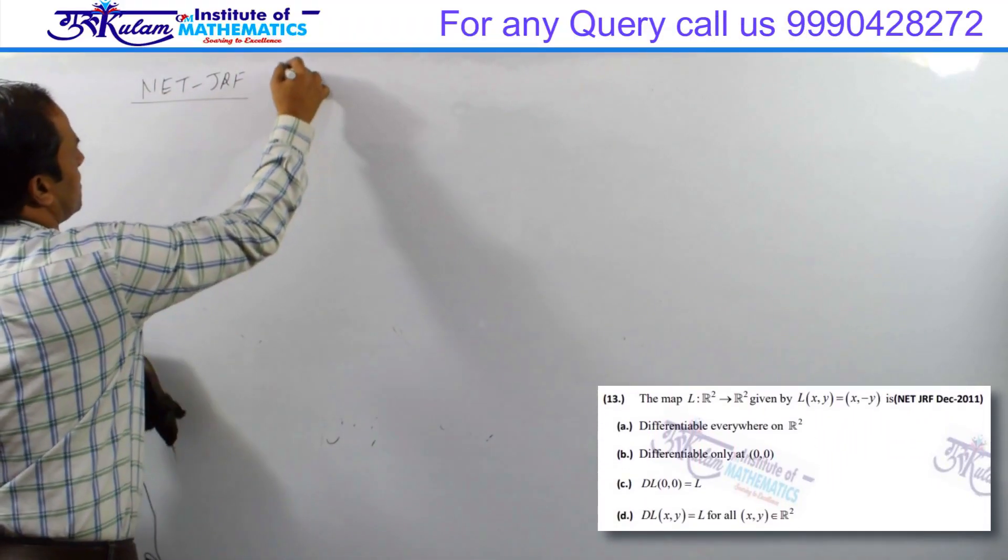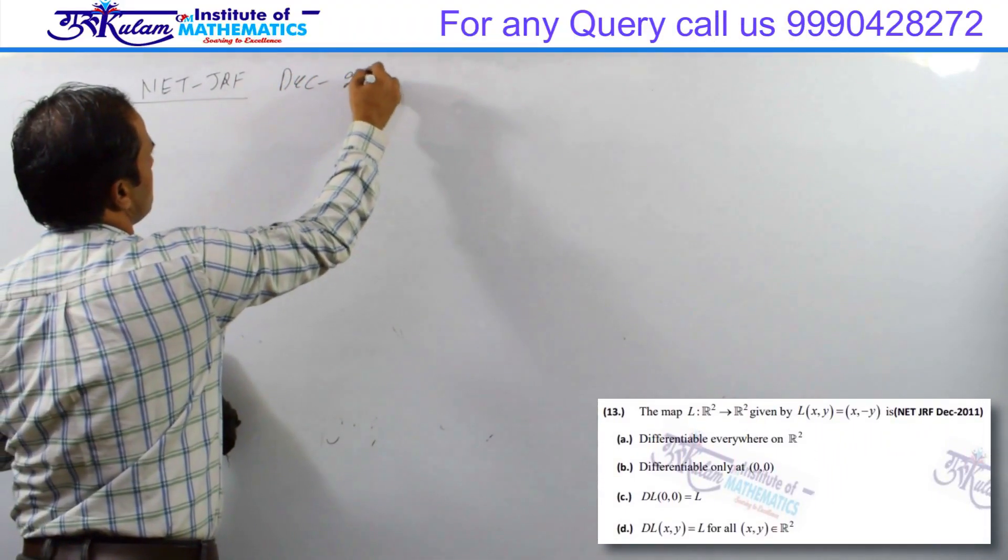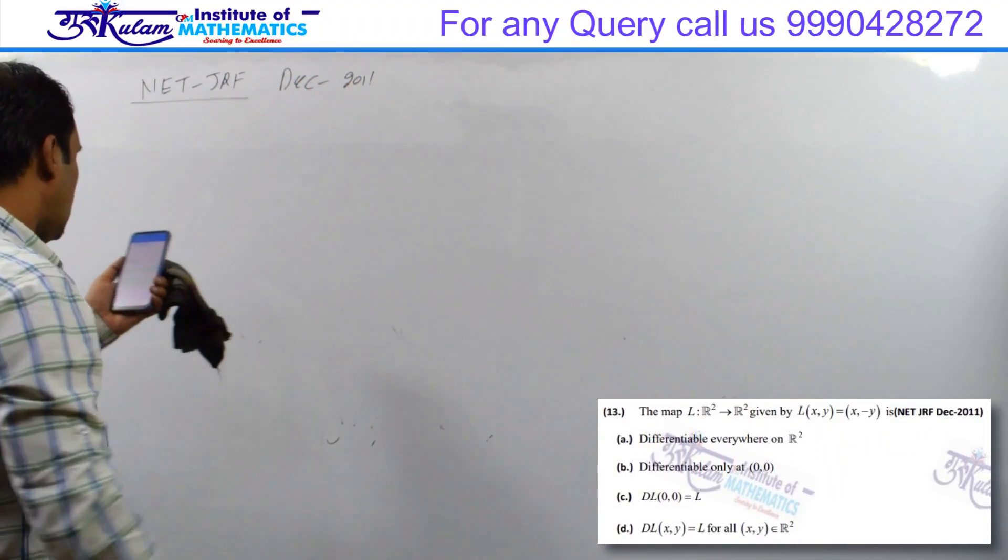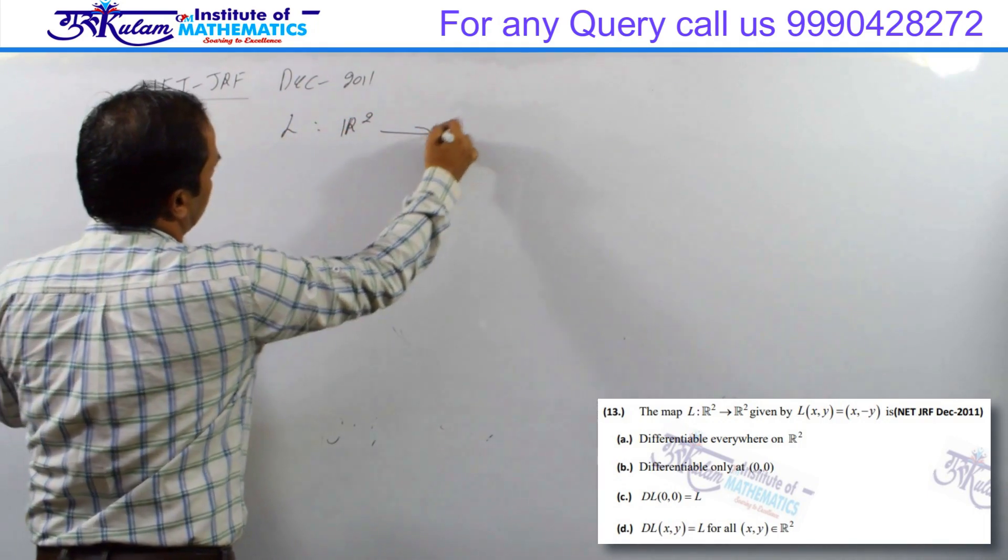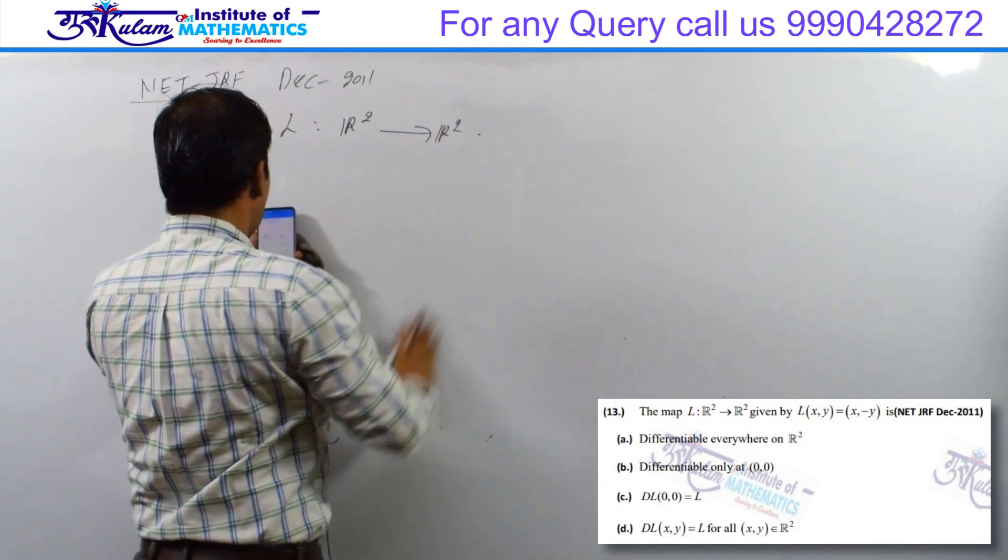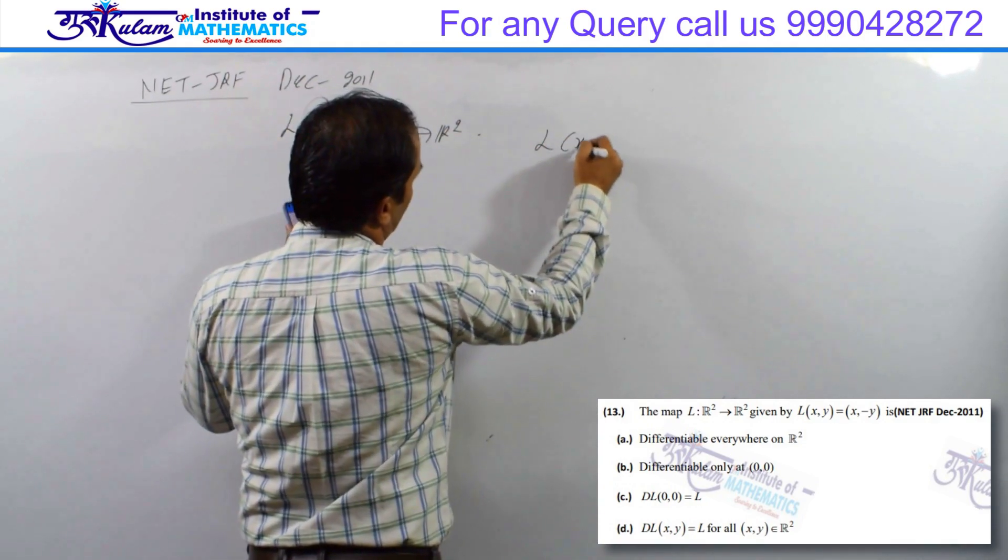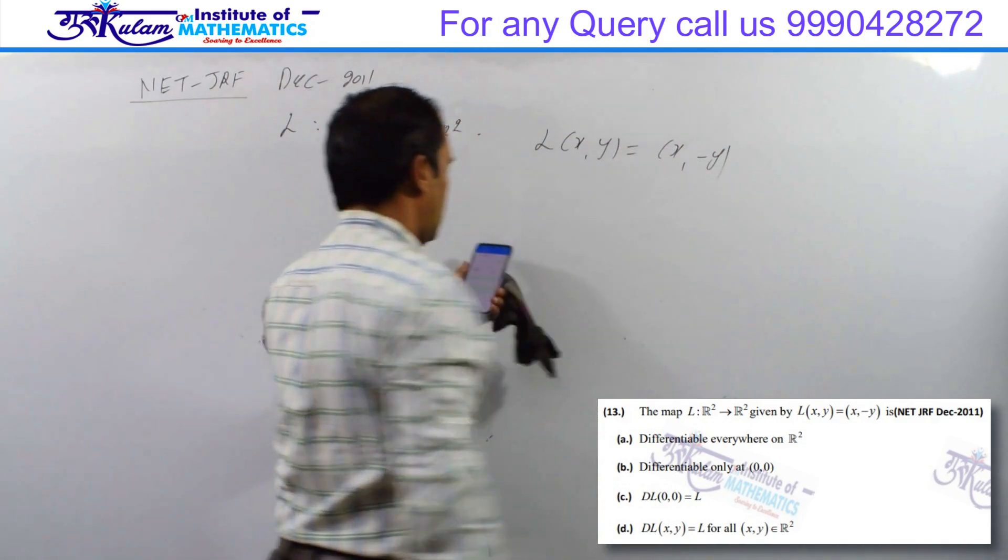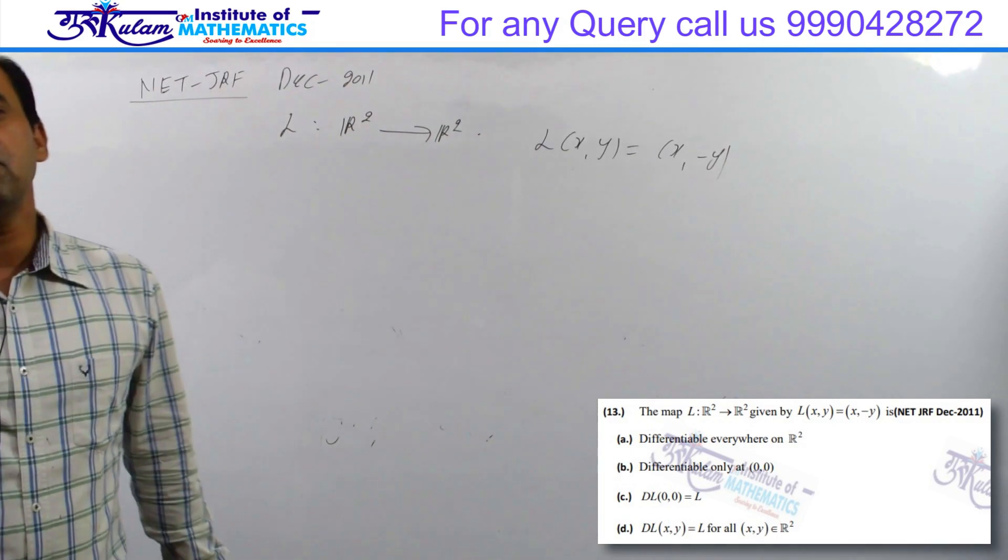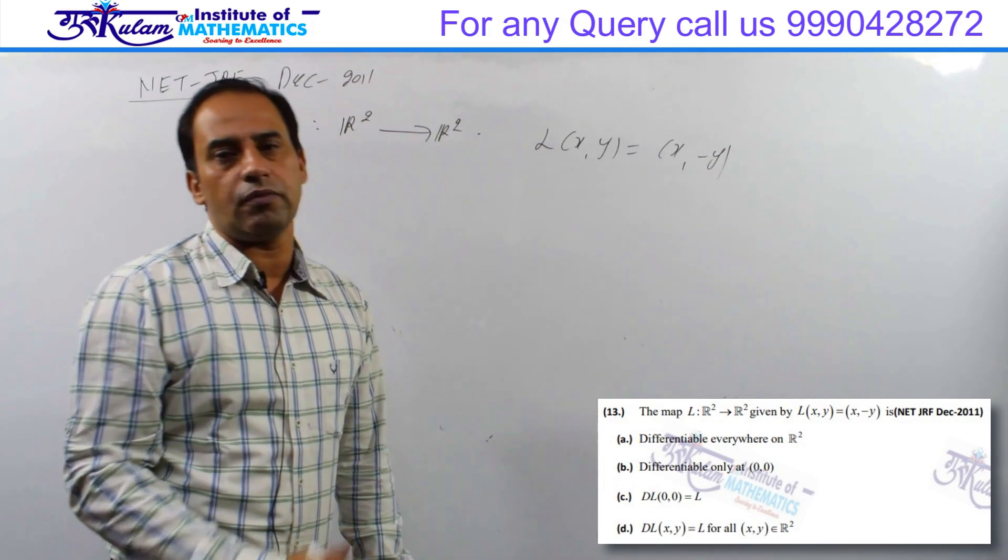So this question is from December 2011. Let L be a function given which is from R square to R square such that L of X comma Y is equal to X and minus Y. The function is basically a linear transformation.